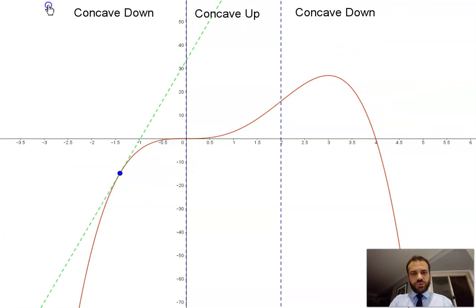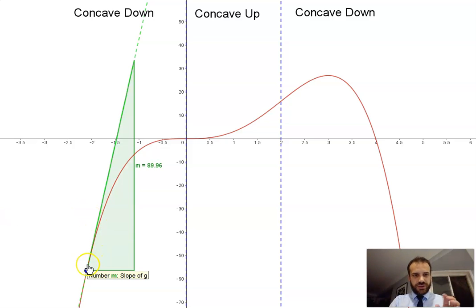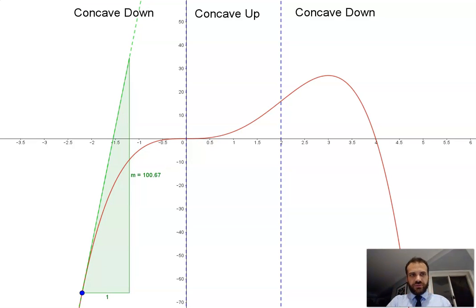But there's something even more special about that tangent as it moves from left to right. Something special is happening to that tangent in each portion. The special thing has to do with the gradient of that tangent. Here is our gradient of our tangent. Now it's currently 89.96. Watch what happens to that number as I move through the concave down portion.